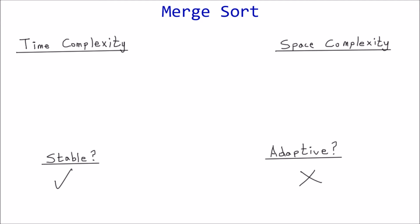Adaptability: merge sort is not an adaptive algorithm, meaning there isn't a significant performance improvement for sorted or nearly sorted lists. Regardless of how sorted the list may be initially, the same number of splits and merges will occur.